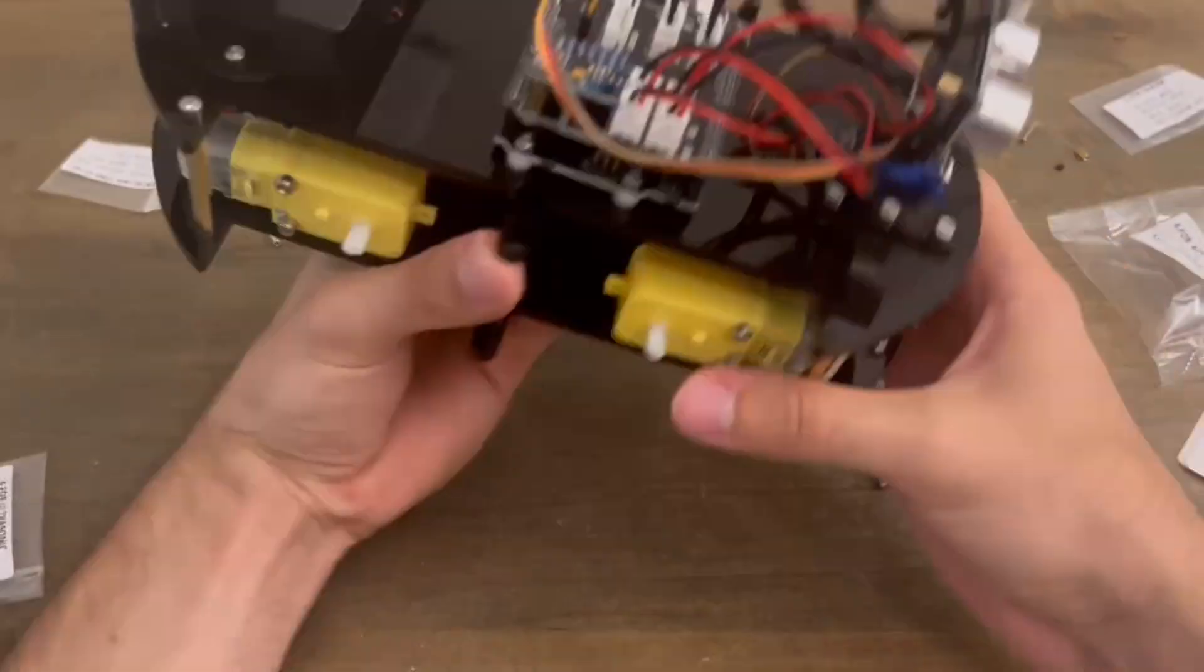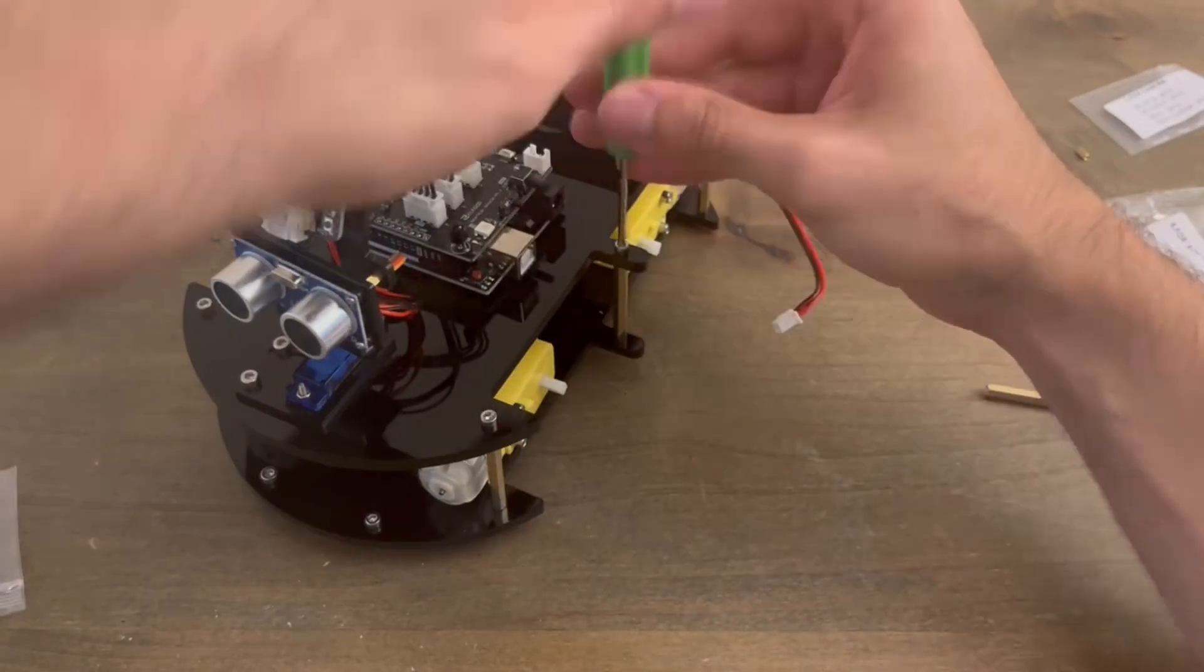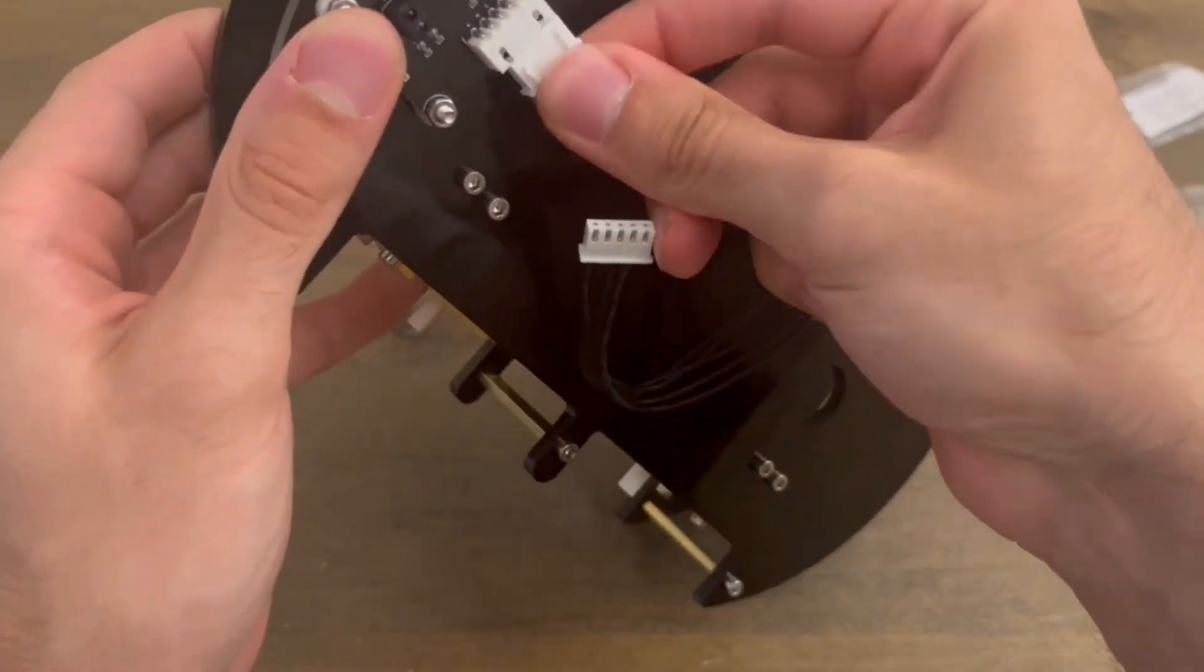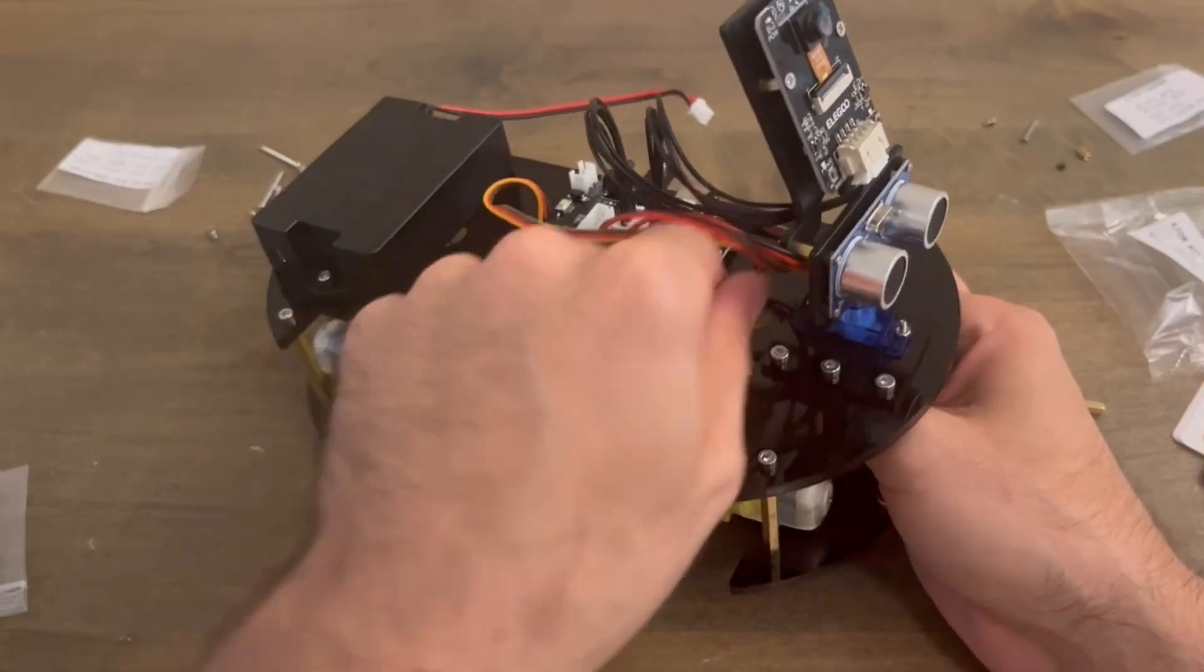I had only put on enough hex screws to secure the top plate, so I decided to put the remaining screws in. After that, we still have to connect the line tracking module, which will feed the wire from below the bottom plate all the way to the top of the top plate.